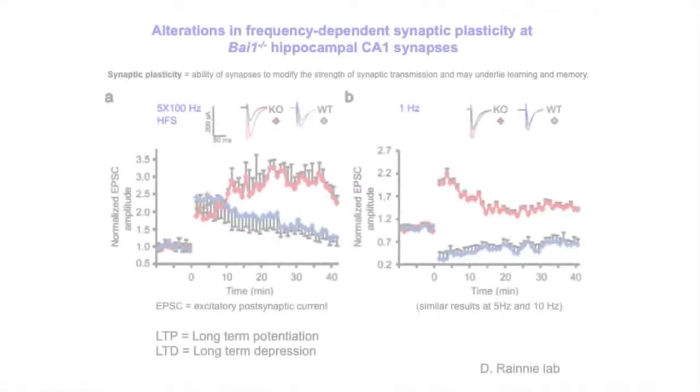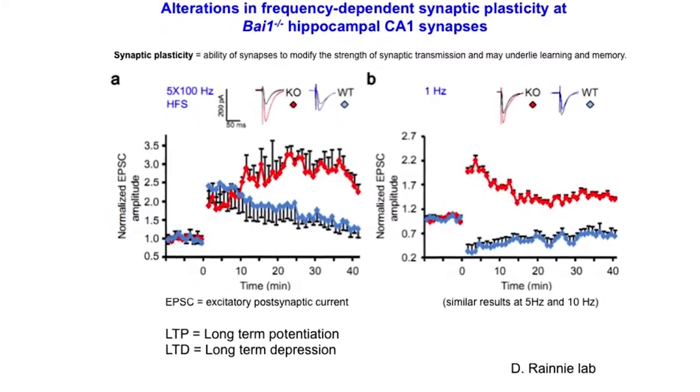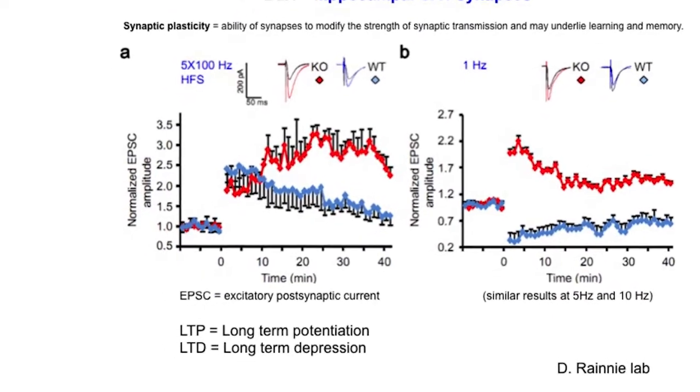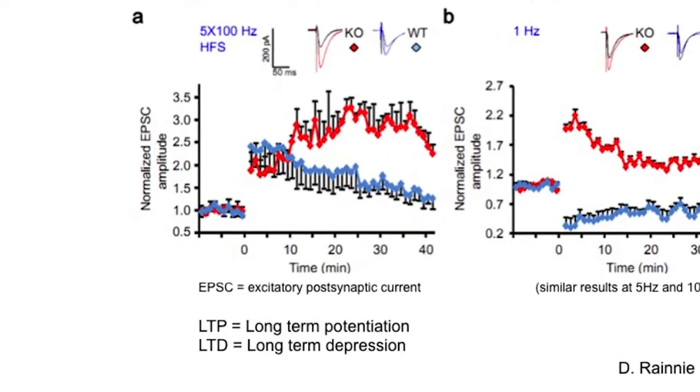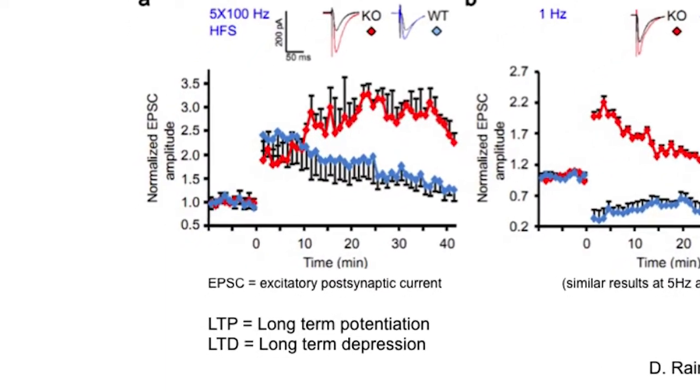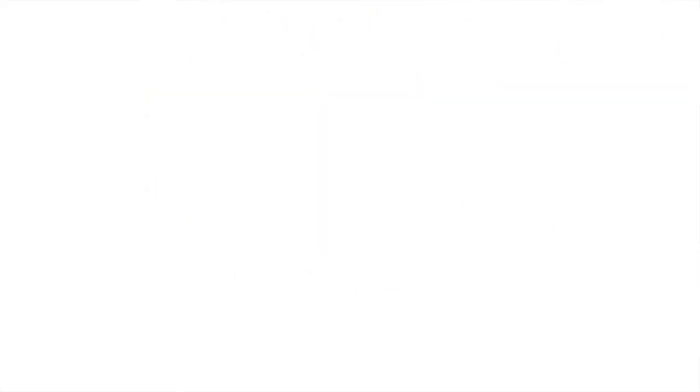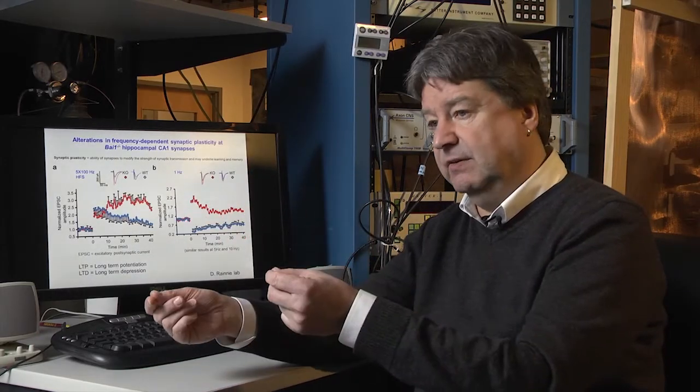With long-term potentiation, you look at a signal coming into a neuron or group of neurons, and then you stimulate that neuron as though it would when activated trying to find the platform. You look to see if the response changes, either increasing or decreasing. An increase in response is long-term potentiation, a decrease is long-term depression.